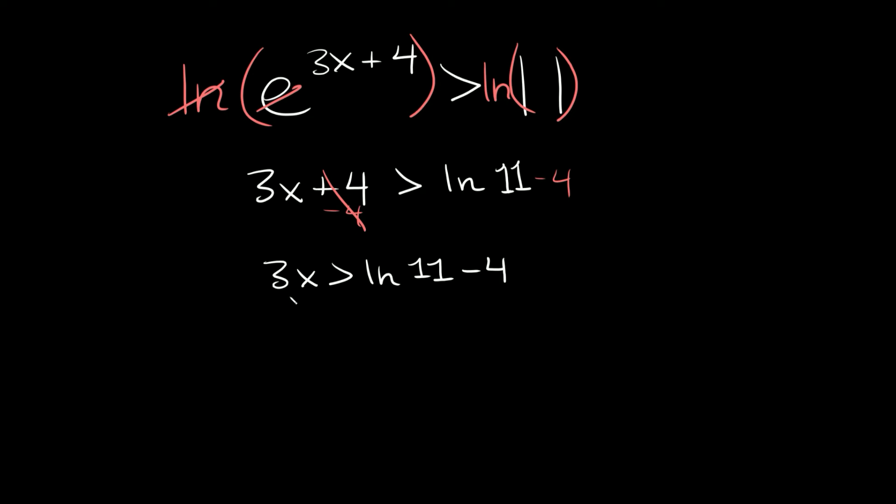And then here we can divide both sides by 3. So then we're left with x is greater than the natural log of 11 minus 4 divided by 3. So then here we're left with x is greater than, and then if you plug this into your calculator you'll get that this is approximately negative 0.534.